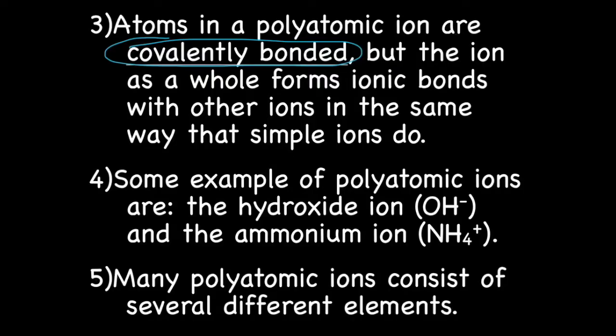Once they're covalently bonded, it becomes a polyatomic ion, and that ion forms ionic bonds with other ions in the same way that simple ions do. So as far as writing formulas, it looks a little different, but you do it exactly the same way.